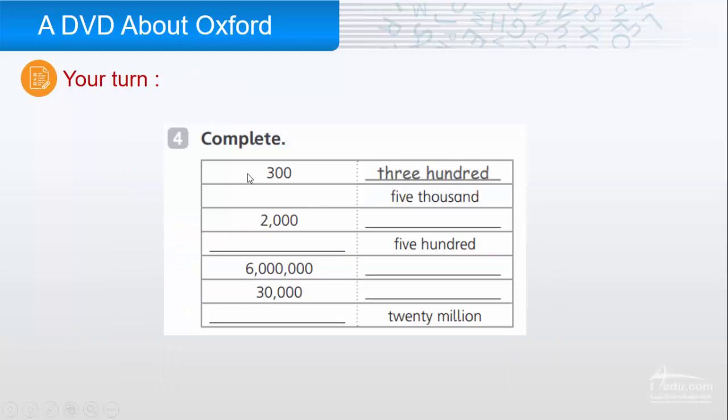Now, complete. Three zero zero is three hundred. Five thousand. How do you write five thousand? Five and three zeros. This number is two thousand. Five hundred, we write five zero zero. And this is six million. This is thirty thousand. And twenty million is written two and seven zeros.